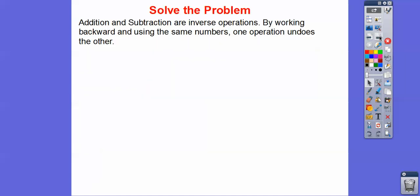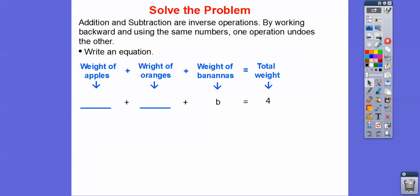And this is how they do that. So addition and subtraction are inverse operations of each other. So by working backwards and using the same numbers, one operation undoes the other operation. So here we go. We're going to write an equation right here. So the weight of the apples plus the weight of the oranges plus the bananas is going to equal the total weight of all the fruit. And they told us the total weight of all the fruit was four pounds.